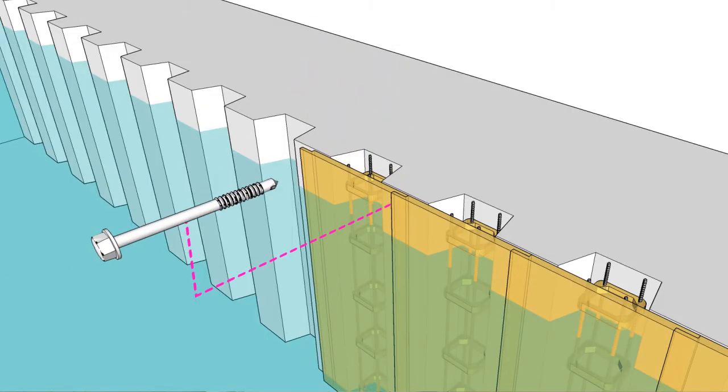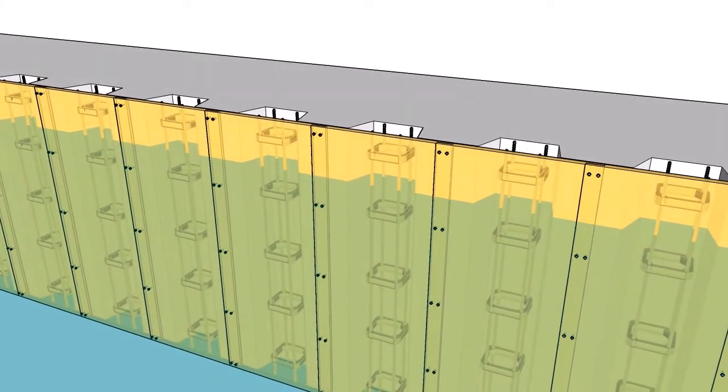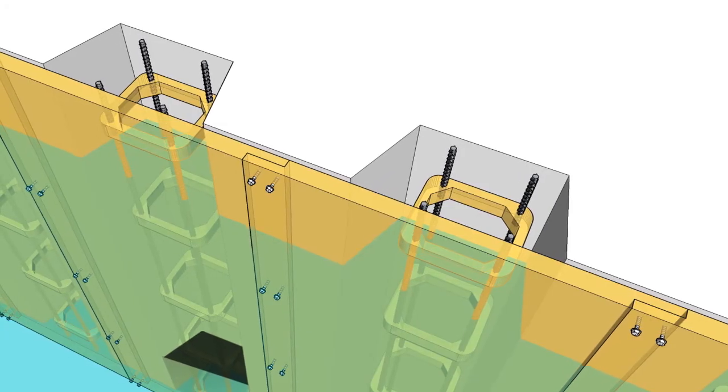When installing, the forms are secured in place using stainless steel self-tapping screws. Once secured, the annular space between the spire form and the structure being protected is filled with underwater grout reinforced with FRP rebar.